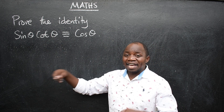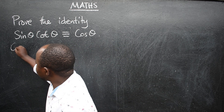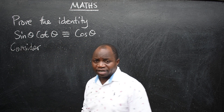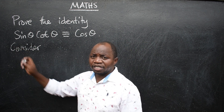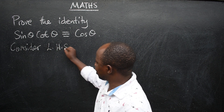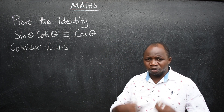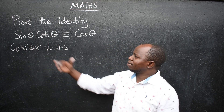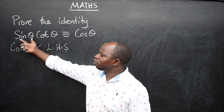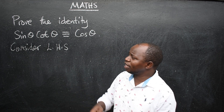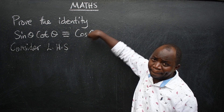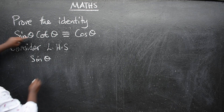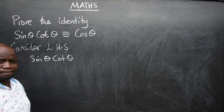In starting to prove a given identity, you should say 'consider.' You should write the word 'consider' — consider which side? The left-hand side. This lets your teacher know which side you are proving. So I'll copy the left-hand side down here: sine theta times cot theta. We want to show that this is identical to what we have on the right-hand side.